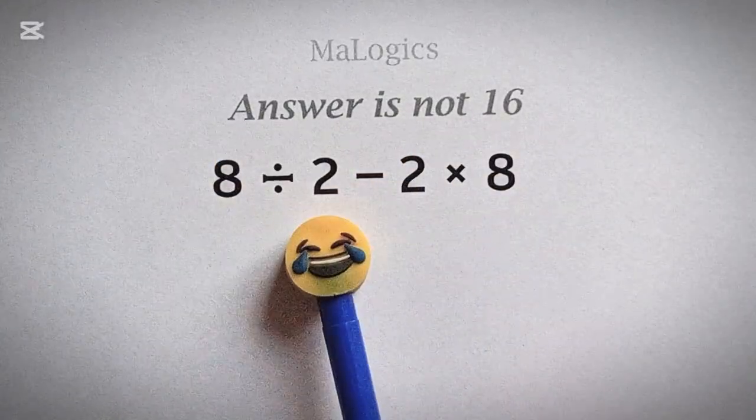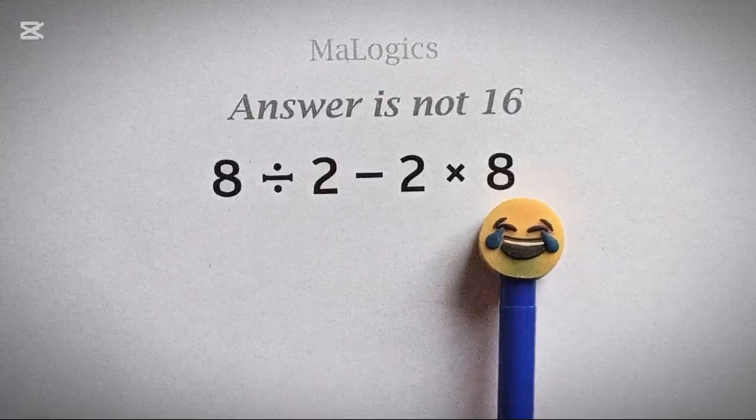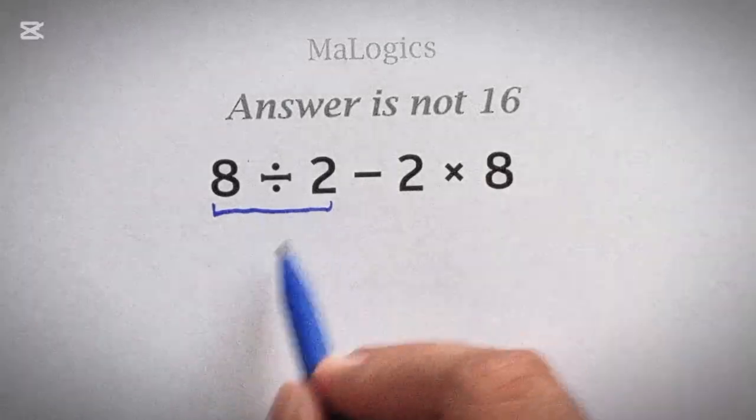The question is 8 divided by 2 minus 2 times 8. Let's do it as most people think it's solution, such as 8 divided by 2 equals 4.